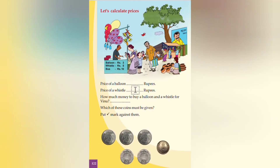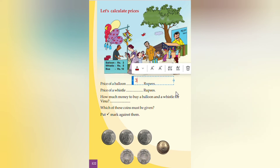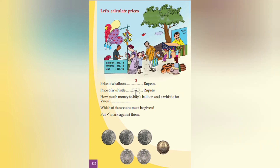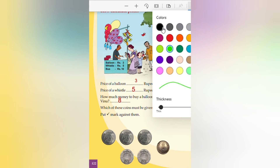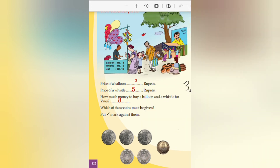Let's calculate prices. The price of a balloon is 3 rupees - we can write 3 here. The price of a whistle is 5 rupees. How much money to buy a balloon and a whistle for Vino? Balloon is 3, whistle is 5, so the total will be 8. We can write 3 plus 5 equals 8.